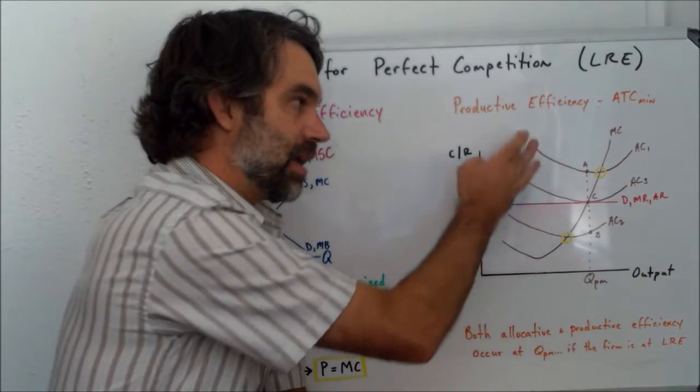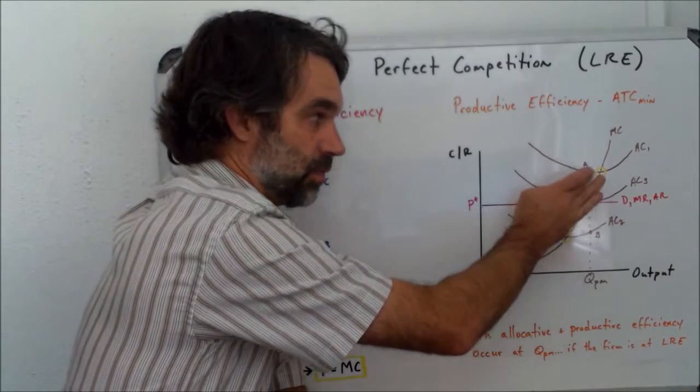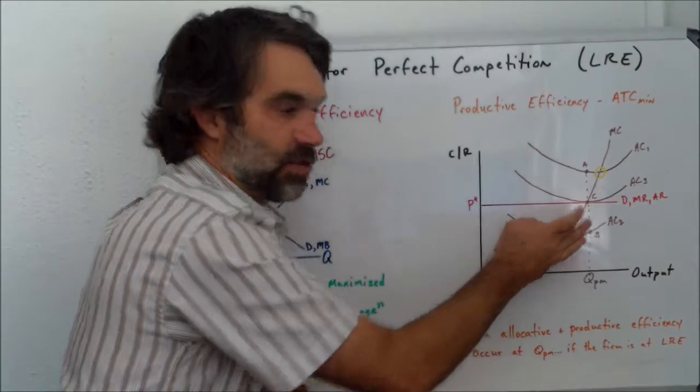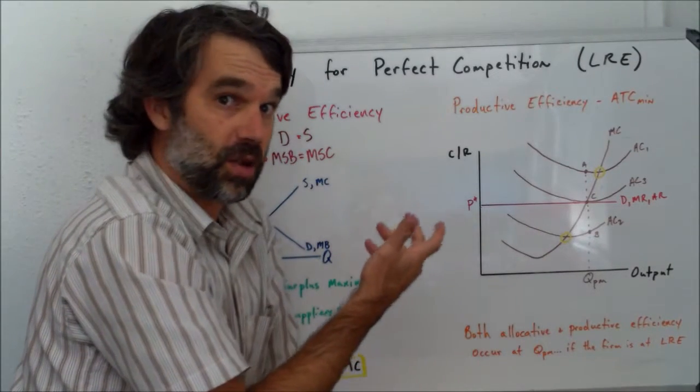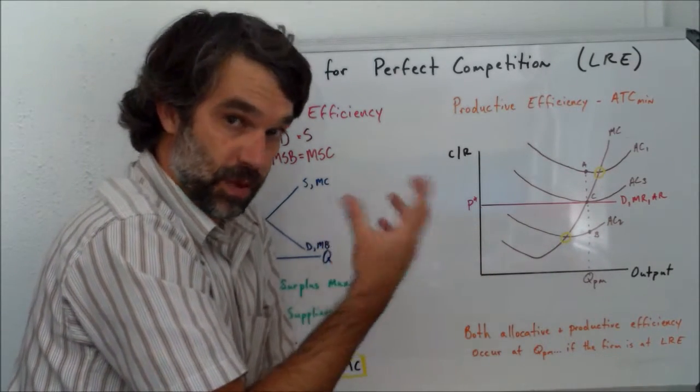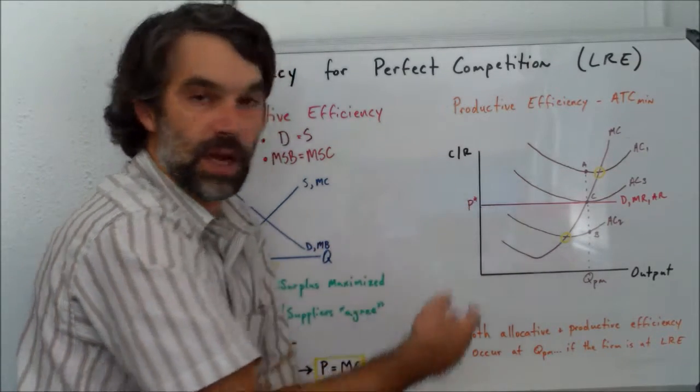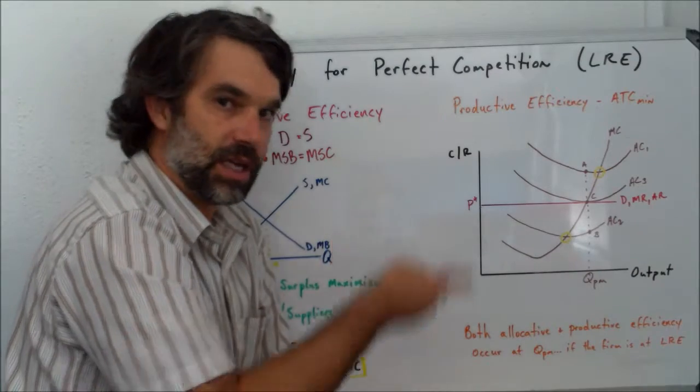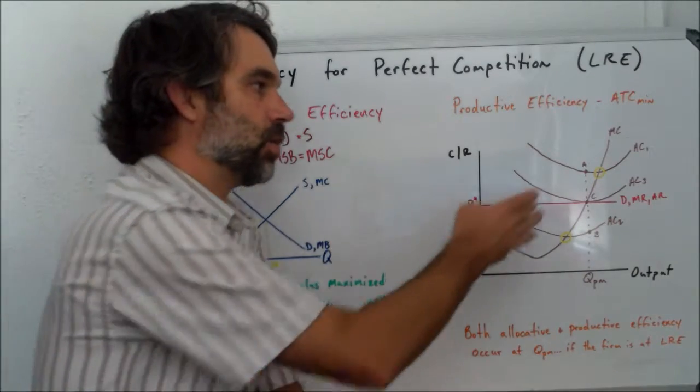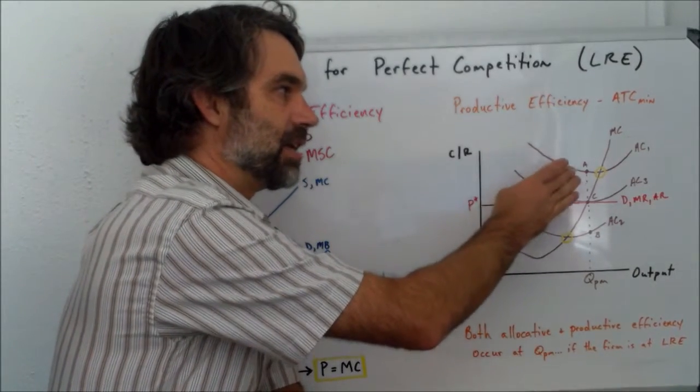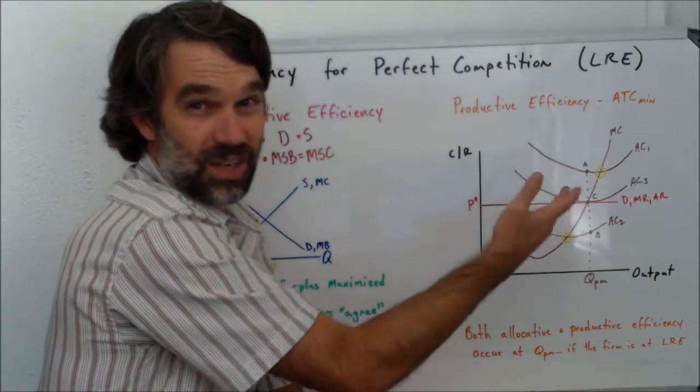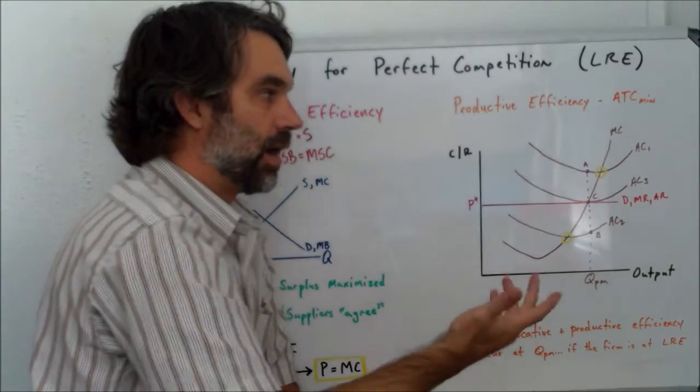But keep in mind if average costs at this point A are greater than average revenue, well then this firm is going to be losing money. And again, from the previous video, we saw that if firms are losing money, they'll exit the industry and price will come up. So we don't find productive efficiency here, but it's also true that we don't see long-run equilibrium on AC1.